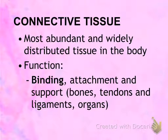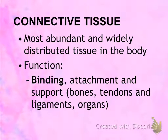Connective tissue is the most widely distributed and most common tissue in the body. It is found everywhere, and they are most different from each other. When you look at epithelial tissue, they look very much like each other, but connective tissue types are different. Because they look so different in appearance, they also have various functions.